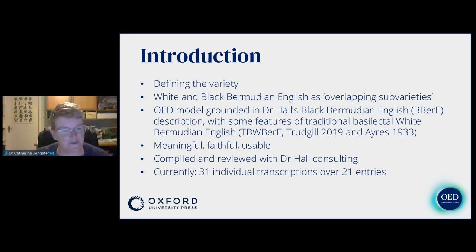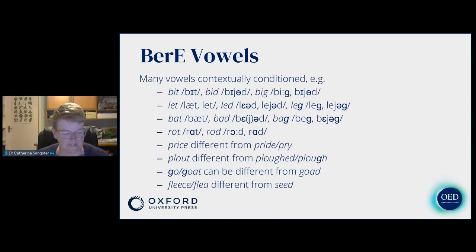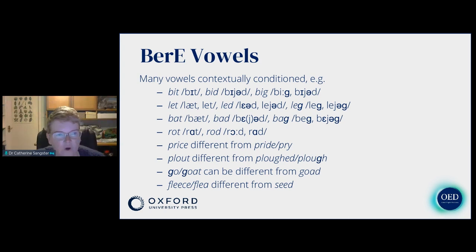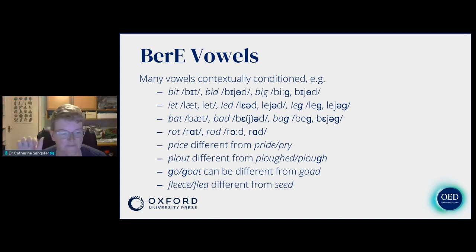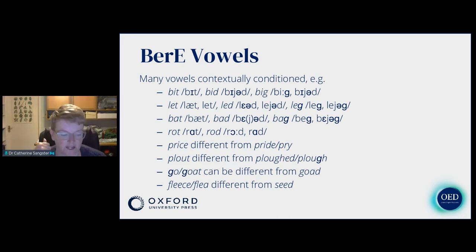I'm going to walk through some of the detail of the model we've used in the OED to transcribe the Bermudian words. A lot of vowels in Bermudian English are contextually conditioned — they vary depending on where you find them. Specifically, they often have one form before a voiced consonant in a monosyllable, and a second form elsewhere. This is a feature sometimes called southern breaking — John Wells called it that in 1982 — and it patterns with some southern US English monophthongs which have diphthongal variations in certain contexts.